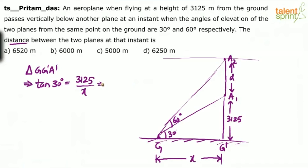3125 by X. So we can say X equals 3125 by tan 30. How much is tan 30? 1 by root 3. Or nothing but 3125 root 3.